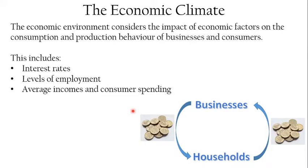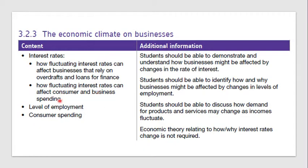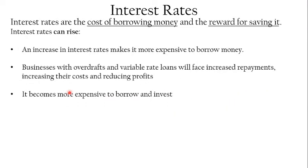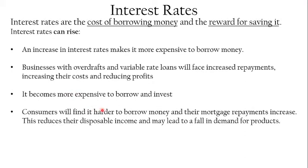The specification also states that fluctuating interest rates affect consumer and business spending. We've seen that businesses find borrowing more expensive and therefore spend less. Consumers also find it harder to borrow — things like cars and houses become less affordable. Consumers with variable rate mortgages will see their repayments increase, which reduces their disposable income, and there may be a fall in demand for products.